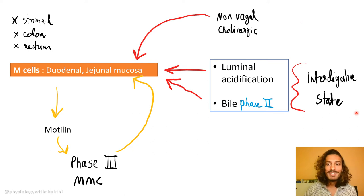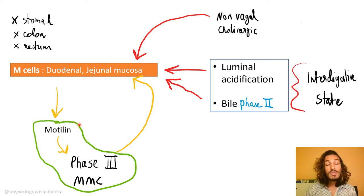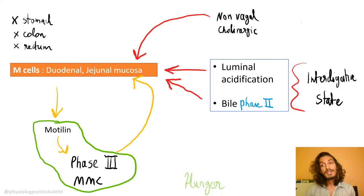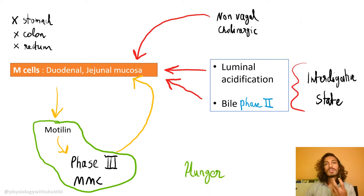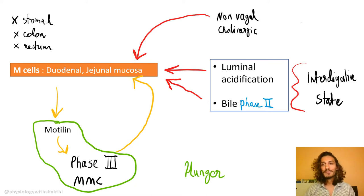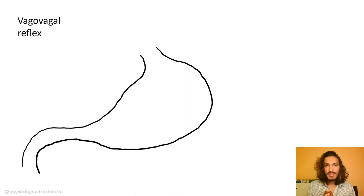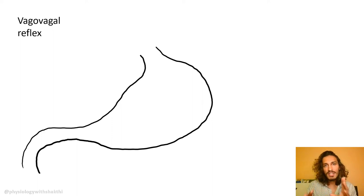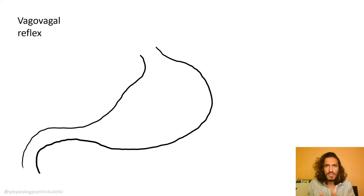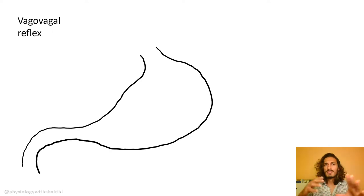An interesting concept: the motilin-induced Phase three MMC in the antrum is linked to the hunger pang sensation you feel. Before explaining the mechanisms further, note that currently we do not have enough confirmed data — there are a few theories, the most commonly accepted being the vago-vagal reflex, with other theories briefly mentioned so you understand where research currently stands.